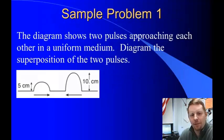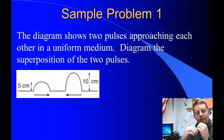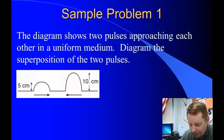Easier to show with a sample problem. The diagram shows two pulses approaching each other in a uniform medium, and they're going opposite directions, so they're coming toward each other. Diagram the superposition of the two pulses. Well, when they meet, as they cross over, their amplitudes are going to add, they're going to get bigger, and then they're going to continue on their way. So as they meet, this should look something like that.